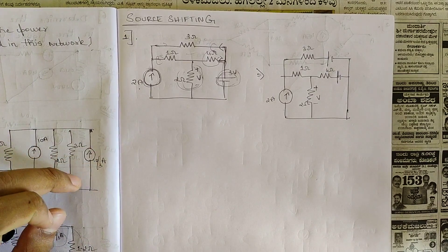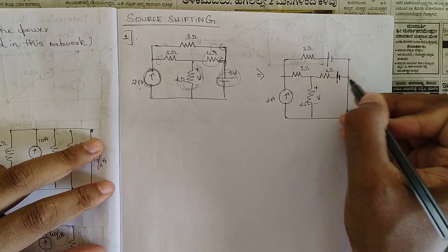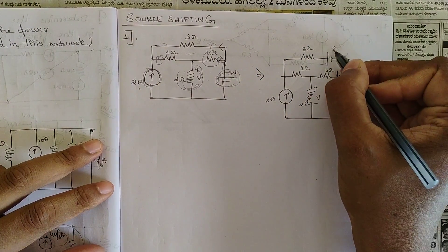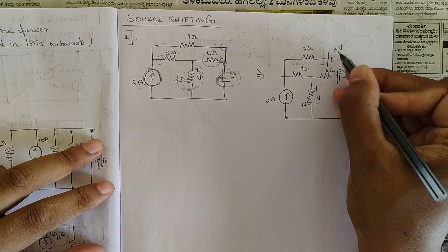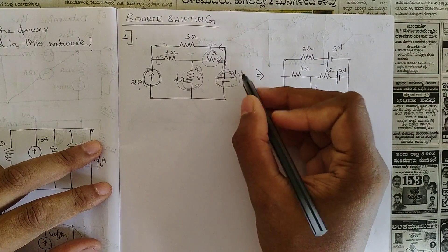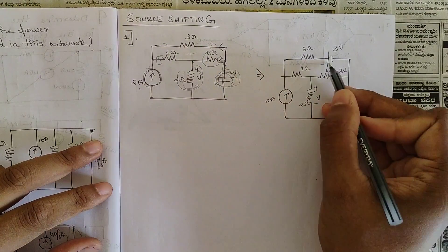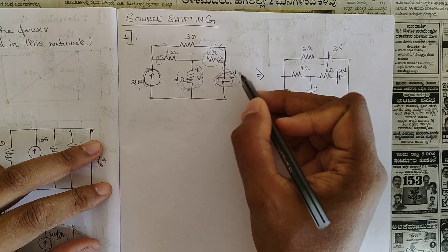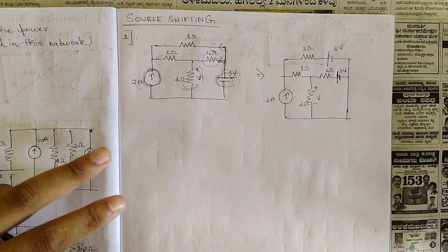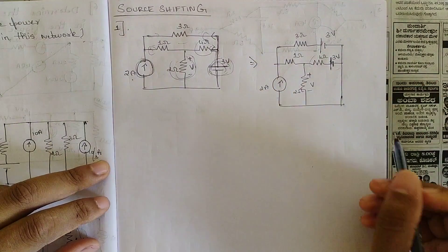I have written the circuit and shifted this source to these two branches with respect to polarity. No change in polarity and no change in the value — it remains as it is. Don't try to divide the voltage value. Since we have divided into two voltage sources, don't try to divide the value of voltage — keep it as three volts only. Now it satisfies the condition that the voltage source and resistance are in series.